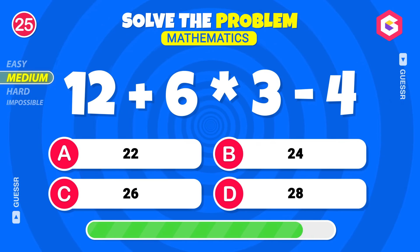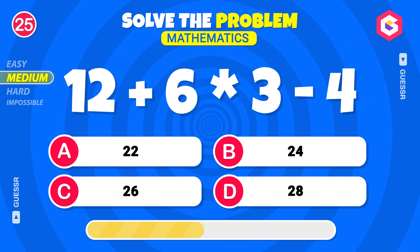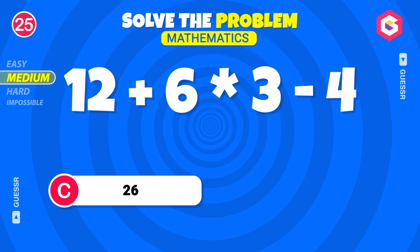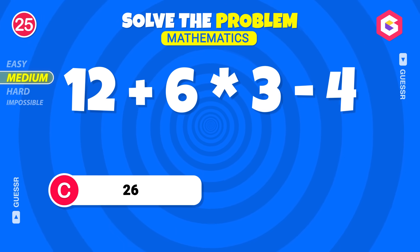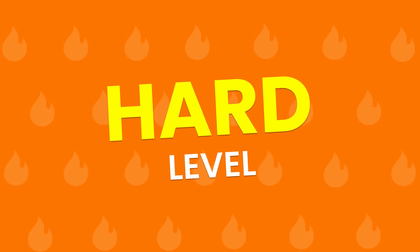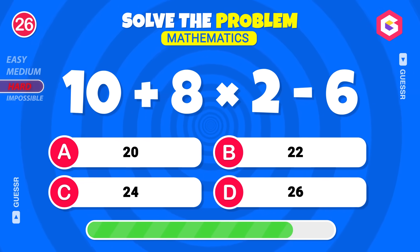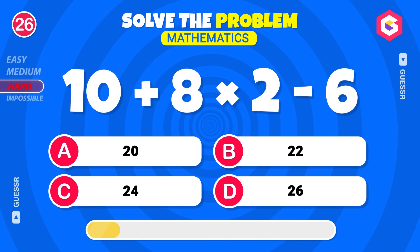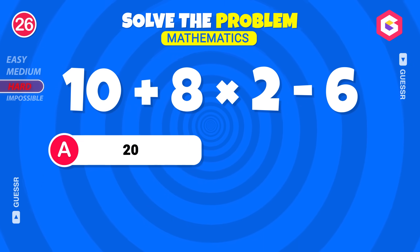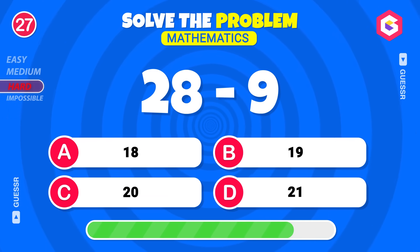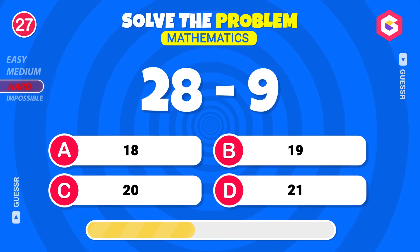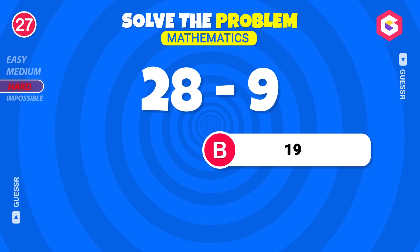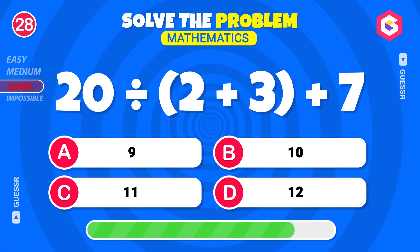Solve this equation — 10. How much is 20 divided by the sum of 2 and 3, then add? 10.